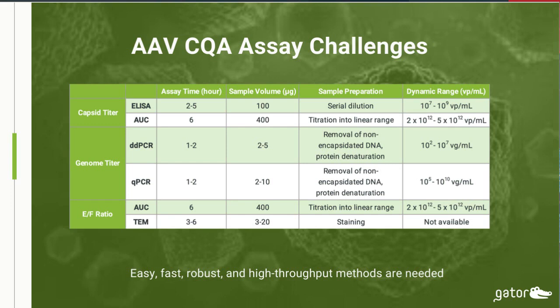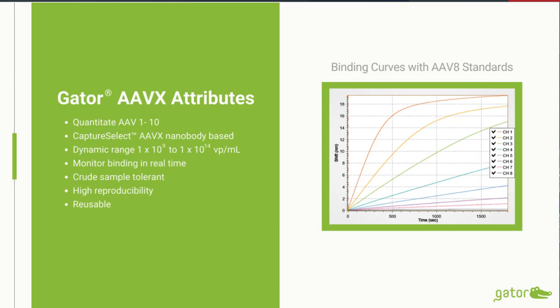There are significant challenges that remain in the AAV quantitation domain. There are three major areas of application: capsid titer, genome titer, and empty versus full ratio. Many methods have been applied in each of these areas, but they all have various performance requirements — assay time, sample volume, sample preparation, and analytical requirements in terms of sensitivity and dynamic range. In spite of all the methods that have been applied, there still is a need for something fast and easy. Our GatorBio biosensors target capsid titer and the empty versus full ratio.